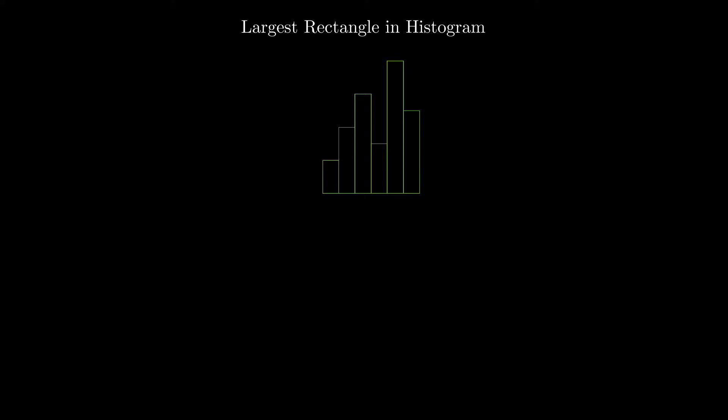To create an increasing stack, we iterate through the array, and for every element, we push it to stack if it is greater than or equal to the top element of the stack, or the stack is empty. If we encounter an element smaller than the top element, we start popping the elements from the stack until we find a smaller element in the stack or the stack is emptied.